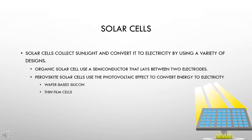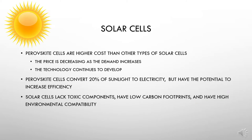They use two main types which include wafer-based silicon and thin film cells. Perovskite cells are a higher cost than other types of solar cells, although the price is decreasing as the demand increases and the technology continues to develop. They convert about 20 percent of sunlight to electricity but have the potential to increase efficiency as the technology develops.